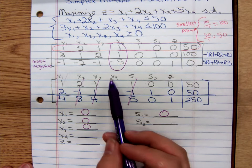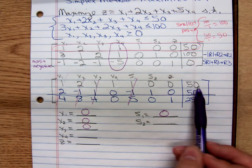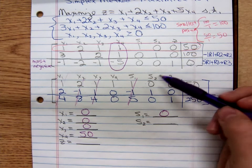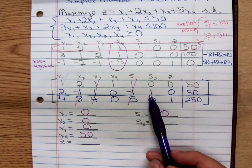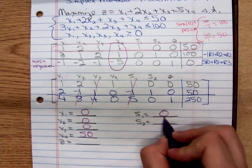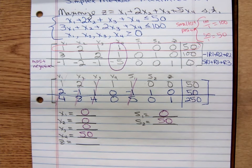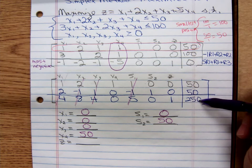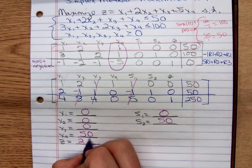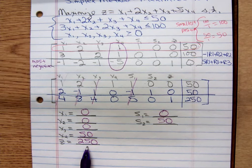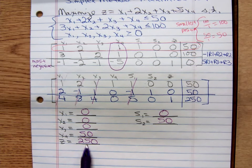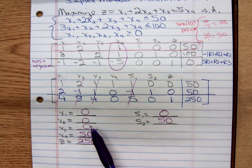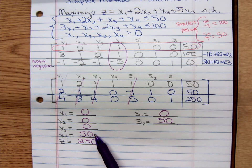For x4, you move down to wherever the 1 is, move across, x4 is 50. For s2, I move down to wherever the 1 is, I move across, s2 is 50. For z, I move down to wherever the 1 is, I move across, so the maximum value of z is 250. It occurs when x1 is 0, x2 is 0, x3 is 0, and x4 is 50.